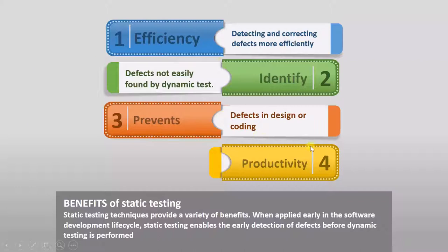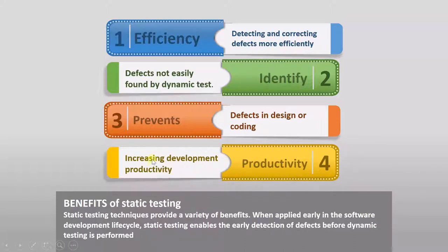This also results in productivity. Since everything is clarified in the first stage, all processes run smoothly — increasing development productivity because in the coding phase you don't have to wait for inputs. So these are four key points: increased efficiency, identification of defects not findable by dynamic testing, prevention of defects from reaching design or coding phases, and increased productivity.